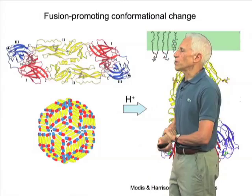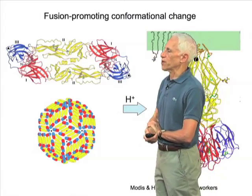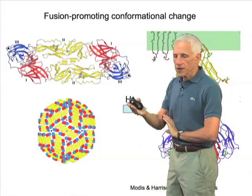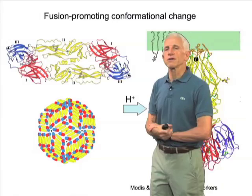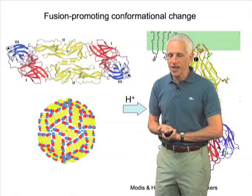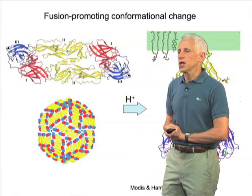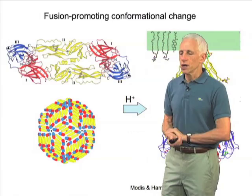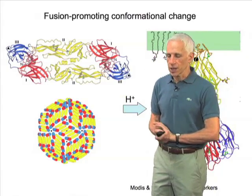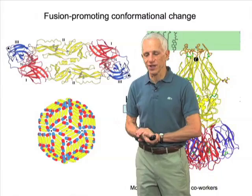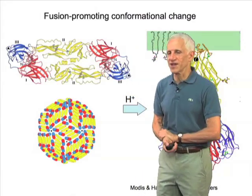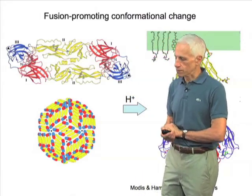cluster together at one end of the trimer and interact with the target cell membrane in order to begin the process by which the two membranes are brought together. In the case of dengue virus, this conformational change is triggered by proton binding — a signal that the virus has arrived in the low pH compartment of an endosome.